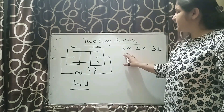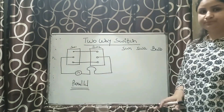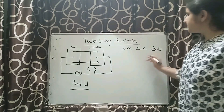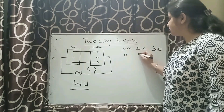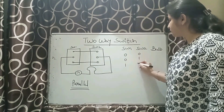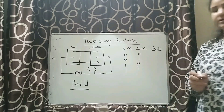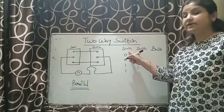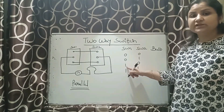I have labelled switch 1, switch 2, and then bulb. Let us assume the truth table: 00, 01, 10, and 11. Here, 0 means the switch is off and 1 means the switch is on.